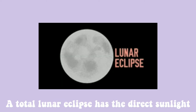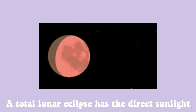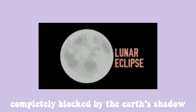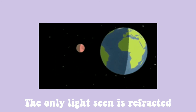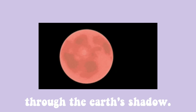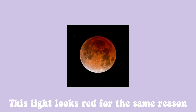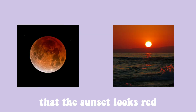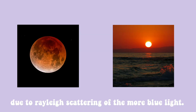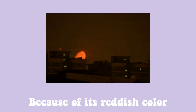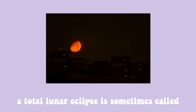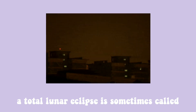A total lunar eclipse has the direct sunlight completely blocked by the earth's shadow. The only light seen is refracted through the earth's shadow. This light looks red for the same reason that the sunset looks red, due to Rayleigh scattering of the more blue light. Because of its reddish color, a total lunar eclipse is sometimes called a black moon.